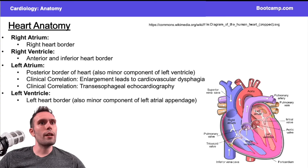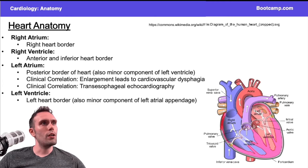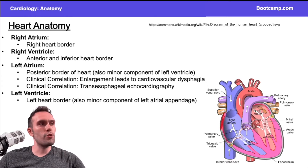Remember the heart has four chambers — just going back to the basics here. So we have the right atrium. The right atrium is going to make up a pretty significant portion of the right portion of the heart. That's what I want you to remember with the right atrium.